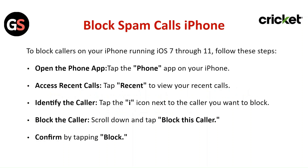To block spam calls on iPhone, for iPhones running iOS 4 through 11, follow these steps. Open the phone app by tapping on it on your iPhone, then access the recent calls by tapping on Recents to view your recent calls.